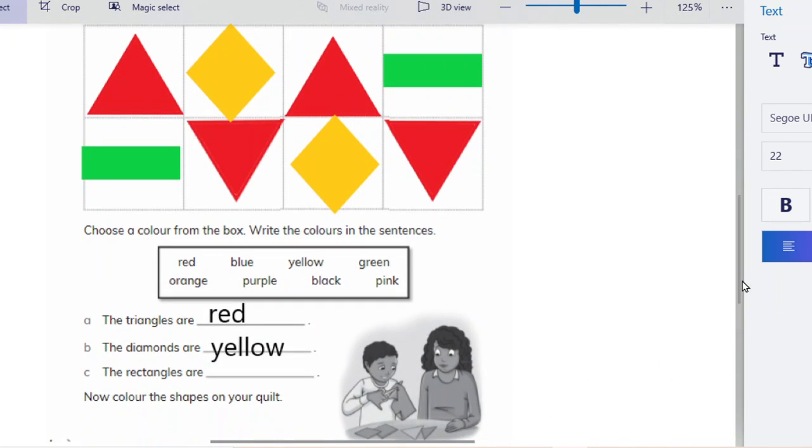All right, first standard. So draw four boxes on top, four boxes below and then fill it in. And underneath you will write the triangles are what color you have chosen. The diamonds are whatever color you have chosen. The rectangles are whatever color you have chosen.